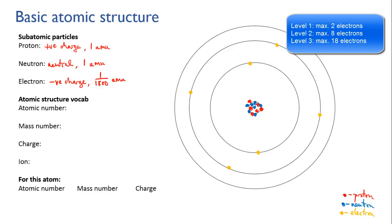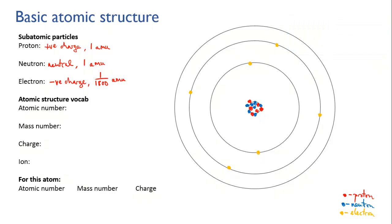The third level, which in this atom is empty, could hold up to 18 electrons. Sometimes you'll hear people talk about the third level being able to hold eight electrons, and there's a good reason for this simplification, but it is a simplification, as are the orbits. We're going to look at this in more depth when we get onto the section on atomic structure, so let's leave that controversy for now.